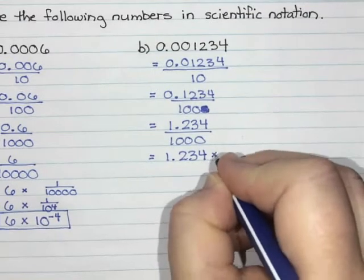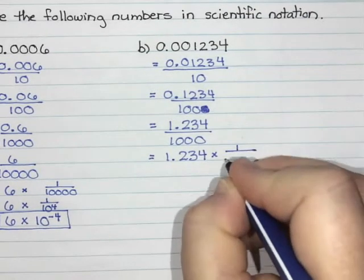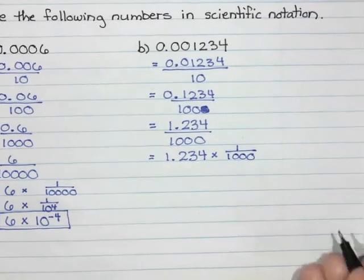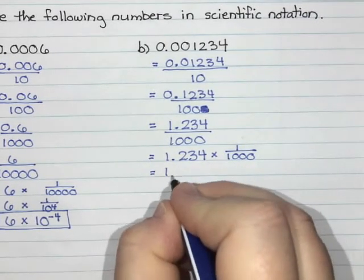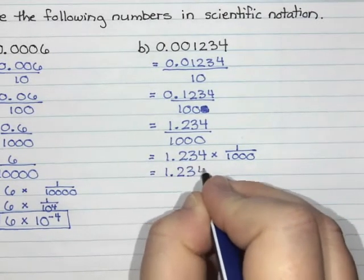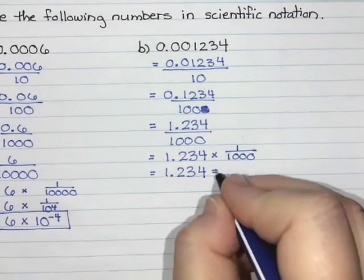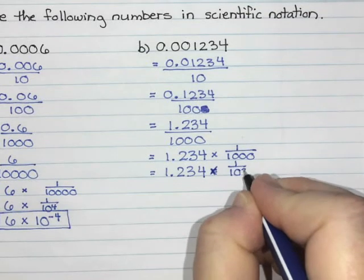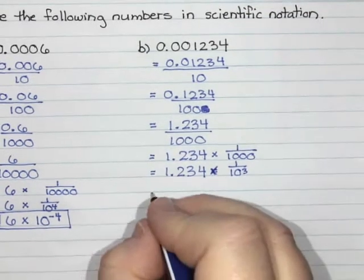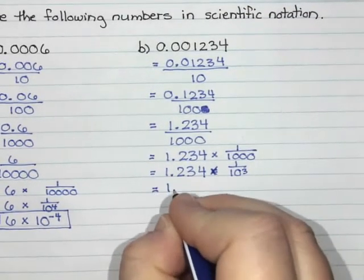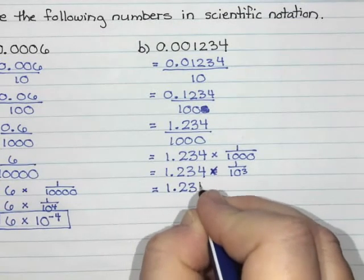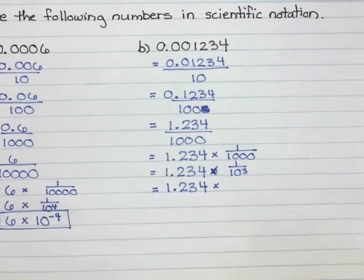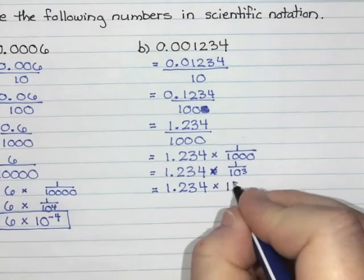Now 1000, that would be the same as multiplying by 1 over 1000. And 1 over 1000 - 1000 has three zeros - so that's going to be 1 over 10 to the power of 3. And then a negative exponent makes a fraction, so this is the same as 1.234 times 10 to the power of negative 3.